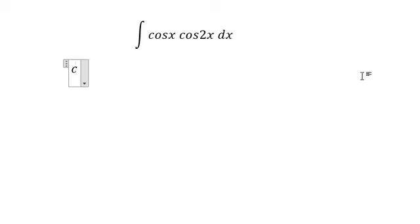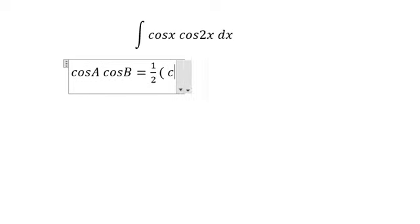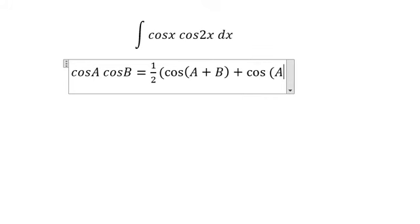Cosine A multiply with cosine B equals to 1 over 2 times cosine of A plus B and cosine A minus B.